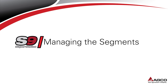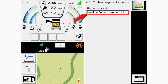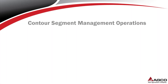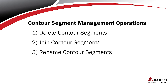To manage the wayline segment, select the contour segment assistant icon in the field settings page. Select the drop-down in the contour segment assistant page to show all the segments saved to the wayline. Four operations can be completed in the contour segment management window: delete segments, join segments, rename segments, and add segments.